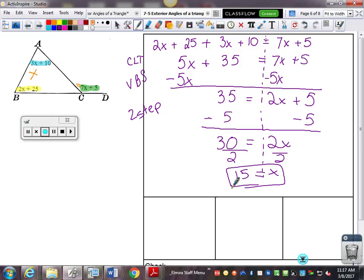And after that, everything should feel pretty much the same as it has been. All right, we've got one angle, 2 times 15 plus 25. That's 30 plus 25 is 55. And 3 times 15 is 45 plus 10, 55.